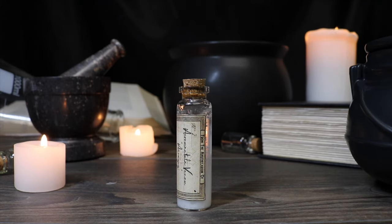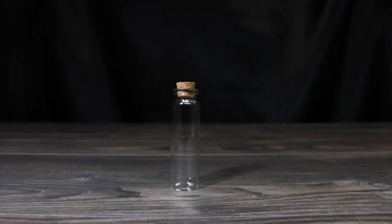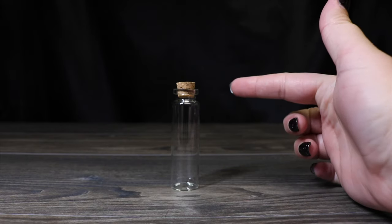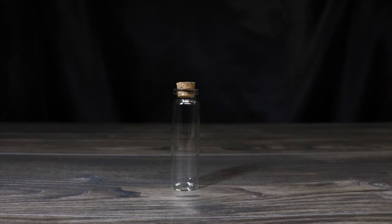Today I'm going to show you how to create acromantula venom. The things you will need to create acromantula venom is one glass bottle with a cork, and I chose to go with a smaller bottle that would be able to fit into a pocket easily, like the kind that Slughorn carries around.